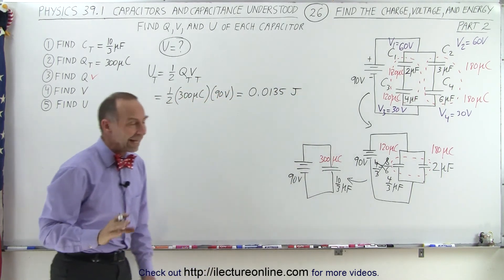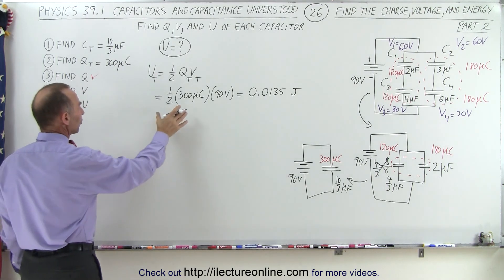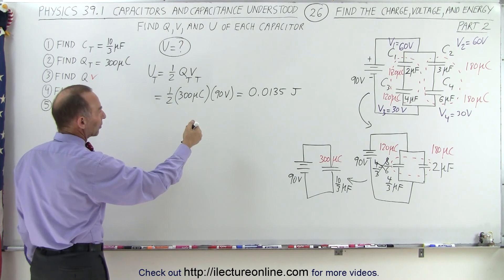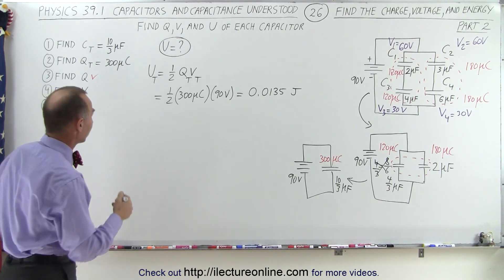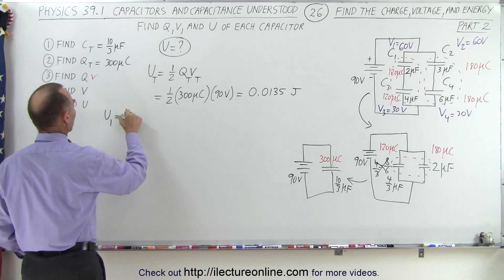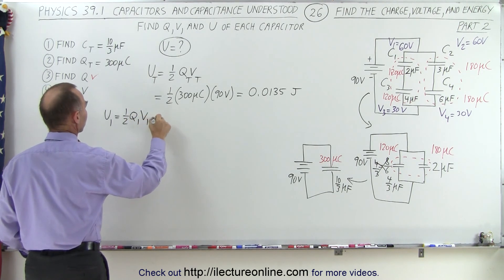So now we're ready to find the energy on each of the four capacitors. Before we can find the energy, you'll need to know the charge on each capacitor and the voltage across each capacitor. That's why we had to do part one first. So let's find U on the first capacitor. That's equal to one-half Q on the first capacitor times voltage across the first capacitor.